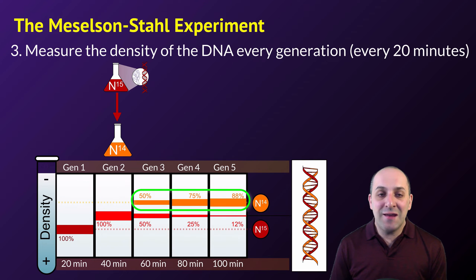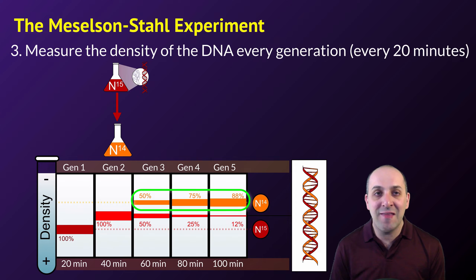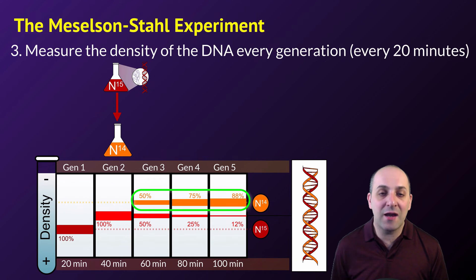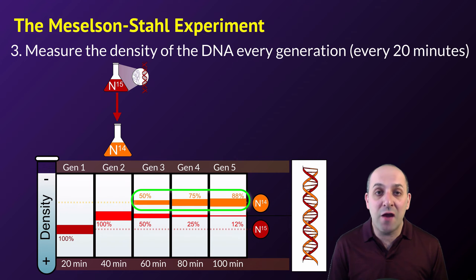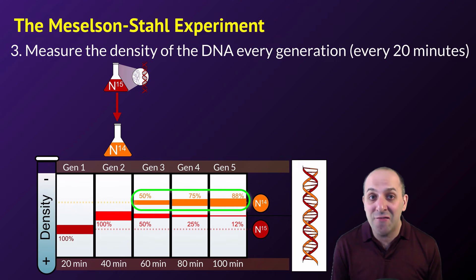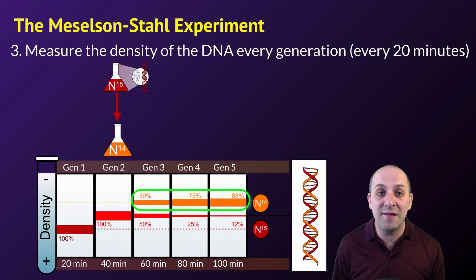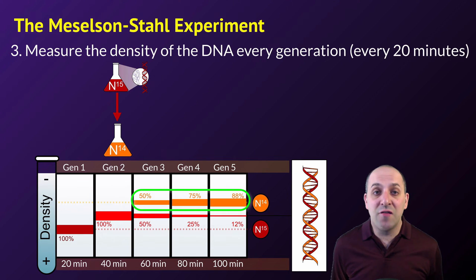Over successive generations, they began to see bands of DNA comprised entirely of light nitrogen, and they saw that intermediate band decreasing in amount. It's the presence of this band of DNA comprised only of light nitrogen that supports the semi-conservative model of replication and refutes the dispersive model. If every DNA strand was made out of combinations of light and heavy nitrogen-containing nucleotides, you would never see a band made out of only light nitrogen-containing nucleotides, which they began to see in Generation 3 and going forward. This was the experimental result that demonstrated that semi-conservative replication was not only the obvious model, but also the accurate one.